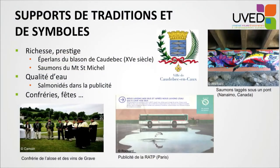Finally, these species are very useful for traditions and symbols, some of which date back a very long time. Here we see the coat of arms of a town in Normandy featuring smelts, which made the town both famous and rich. We also have salmon motifs in Canada in British Columbia under a bridge. Some species are associated with the idea of very clean water — for example, a French transport company advertisement shows a migrating salmon jumping out of a water puddle, conveying that their bus-washing water is so clean a fish could swim in it. There are also brotherhoods celebrating migrating fishes.